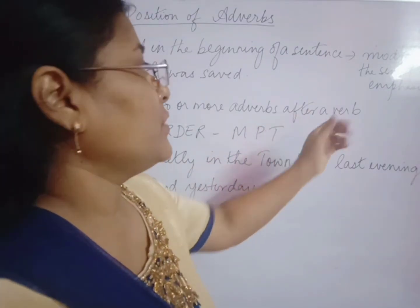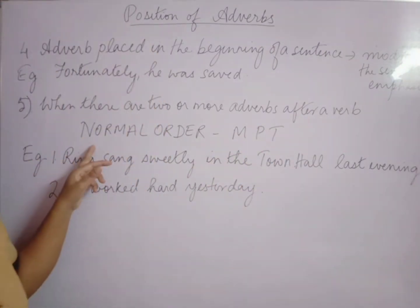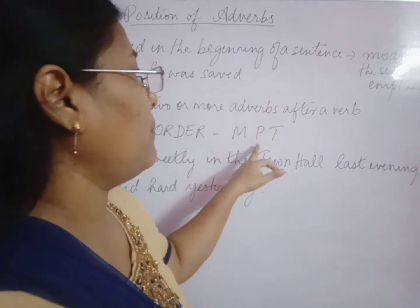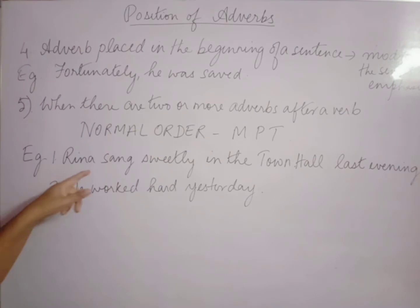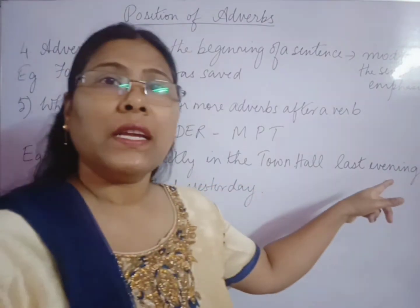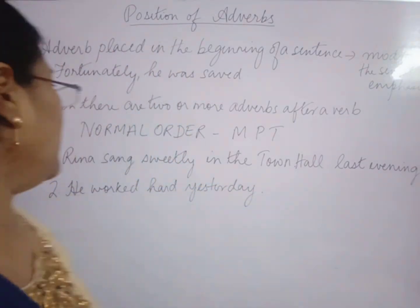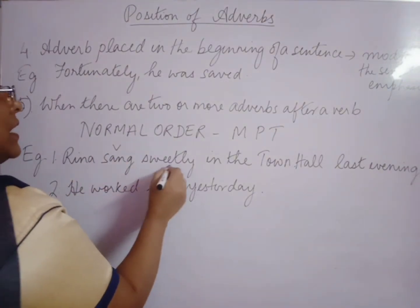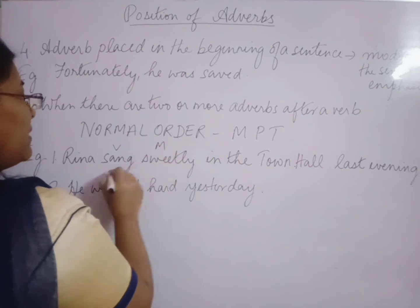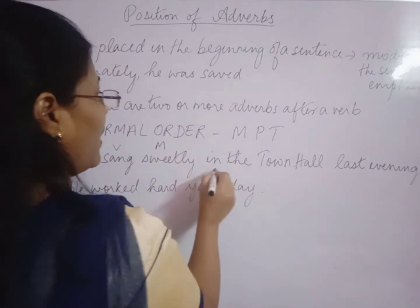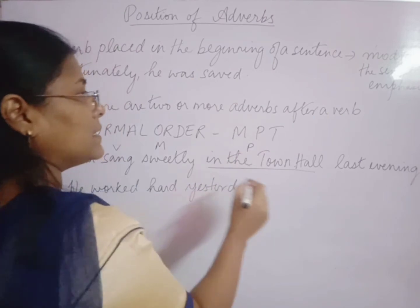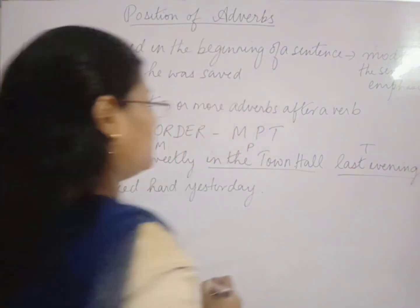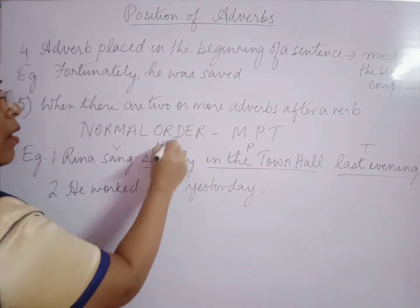When there are two or more adverbs placed after a verb, you have to follow the normal order: MPT — Manner, Place, Time. For example: 'Rina sang sweetly in the town hall last evening.' 'Sweetly' is the manner, 'in the town hall' is the place, and 'last evening' is the time. So it follows the MPT order.